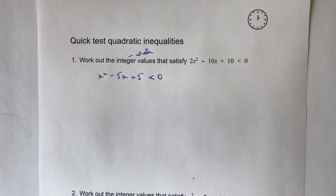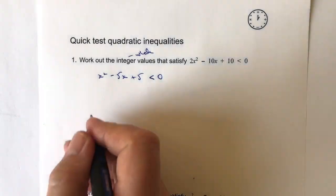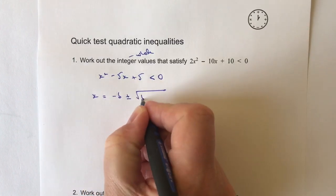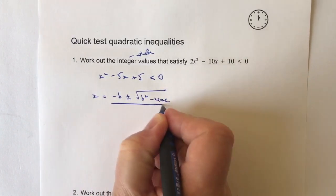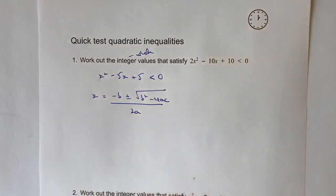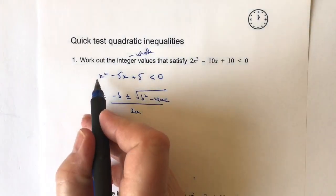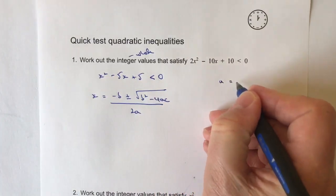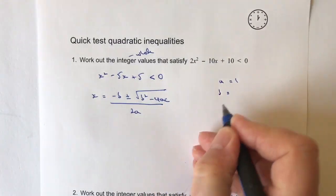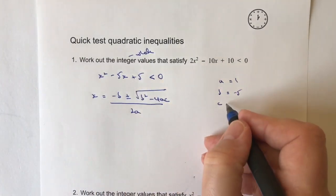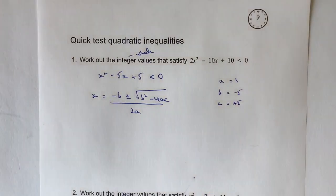So I can take this information and plug it directly into the quadratic formula, which is x equals minus b plus or minus the root of b squared minus 4ac, all over 2a. Looking at this particular equation I've got my three values: a is 1, b is minus 5, and c is plus 5.